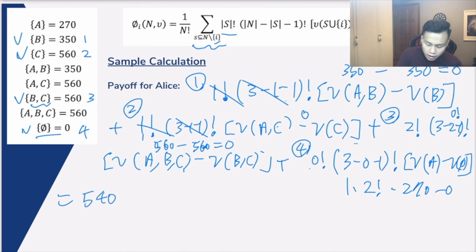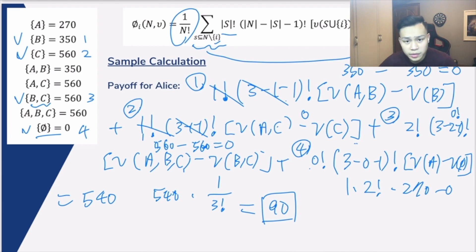What we're calculating is actually this part, the summation of the different marginal contributions taken over all possible permutations. The last step, we're going to divide this over 3 factorial, which is this part. The answer is 90. So according to Shapley value, Alice should be paying 90 NTD for this entire trip if Alice, Bob, and Catherine are all sharing the taxi together.